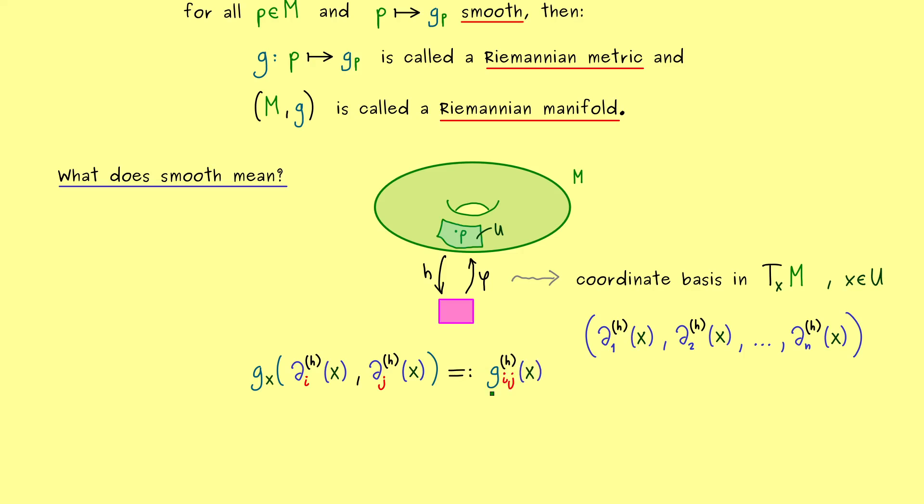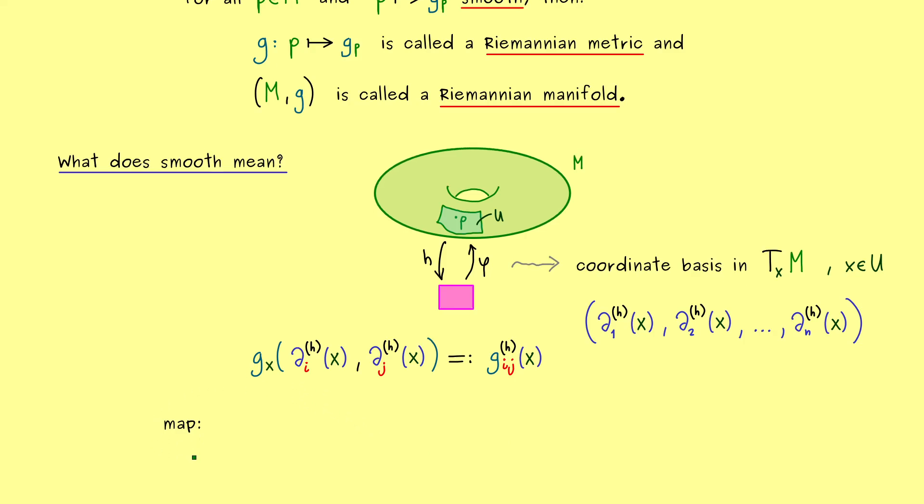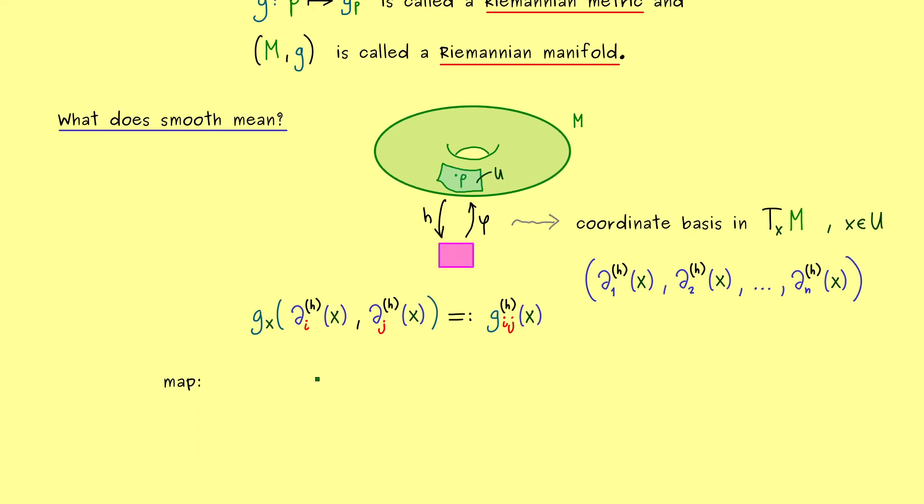However, in order to be precise, we should also put in the dependence of the chart H and the point x. So from this definition, we can conclude that we have a very nicely defined map from M into R. So if you want, you could say that this is a map between two manifolds. And exactly for such maps, we know what the notion smooth actually means. And there you see, this is what we want in the definition of a Riemannian metric.